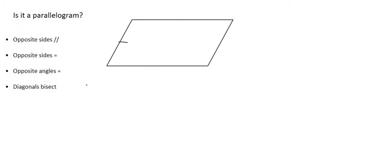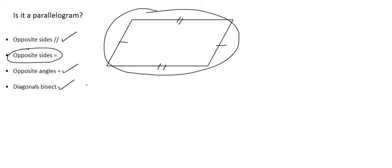In the previous video we started off by saying: what if we start off with opposite sides being equal — does it mean that this is a parallelogram? Well, yes. We added a diagonal line, did a bit of congruency, and what we were able to prove was that the opposite sides were parallel, the opposite angles were equal, and the diagonals bisected. So we concluded that if you have a shape where all the opposite sides are equal, you can call it a parallelogram.